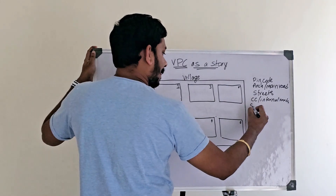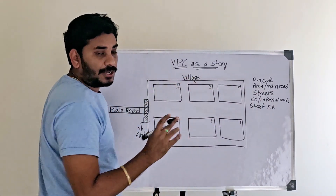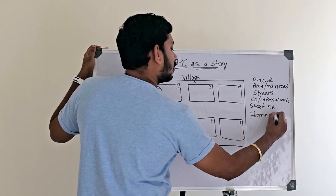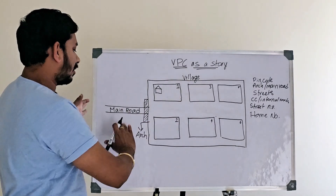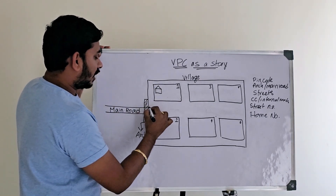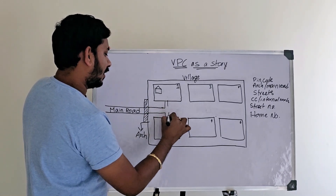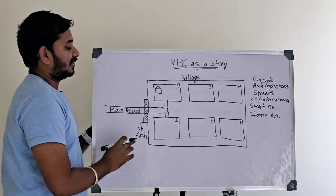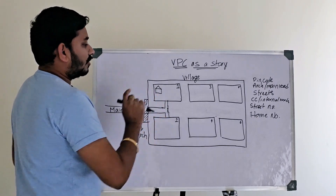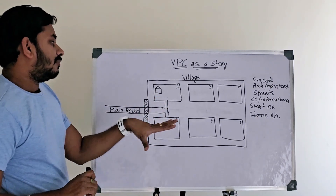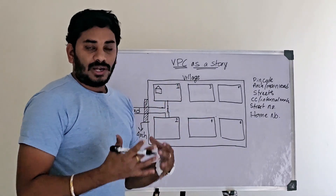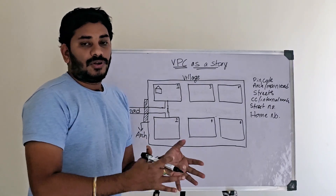In every street you can select one place — for example, a house with a house number. So overall the village has: the main road, the arch, the streets, local ways between streets, and internal roads. The main road is connected. We have the main road, internal road, street, and home. So now I'm going to compare the village to the VPC — the village equals the VPC.